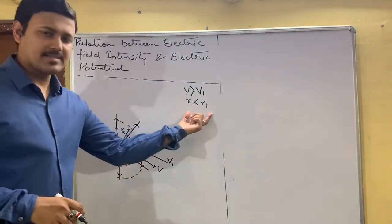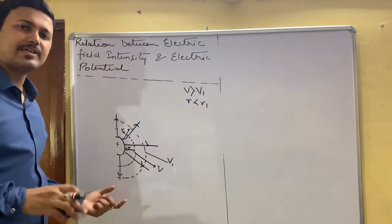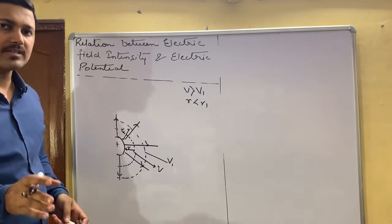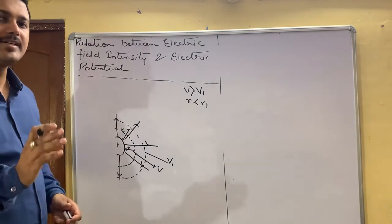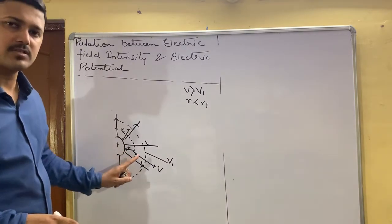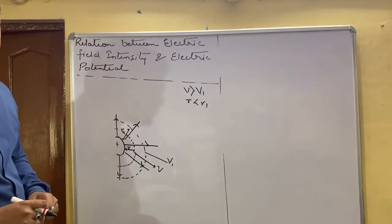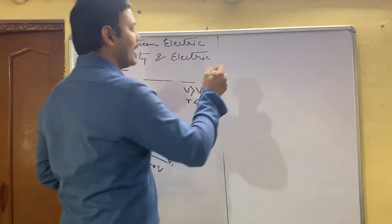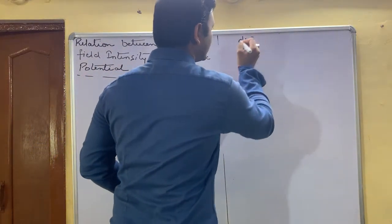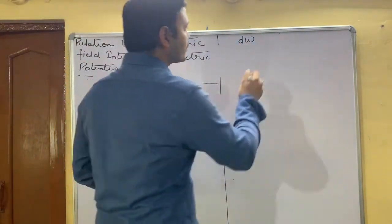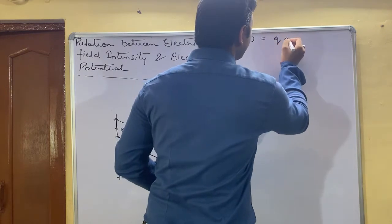By this concept, we can say that a small work is being done to move a test charge from first equipotential surface to second equipotential surface. So the equation is given by, for small work done, dW will be equals to Q into dV.